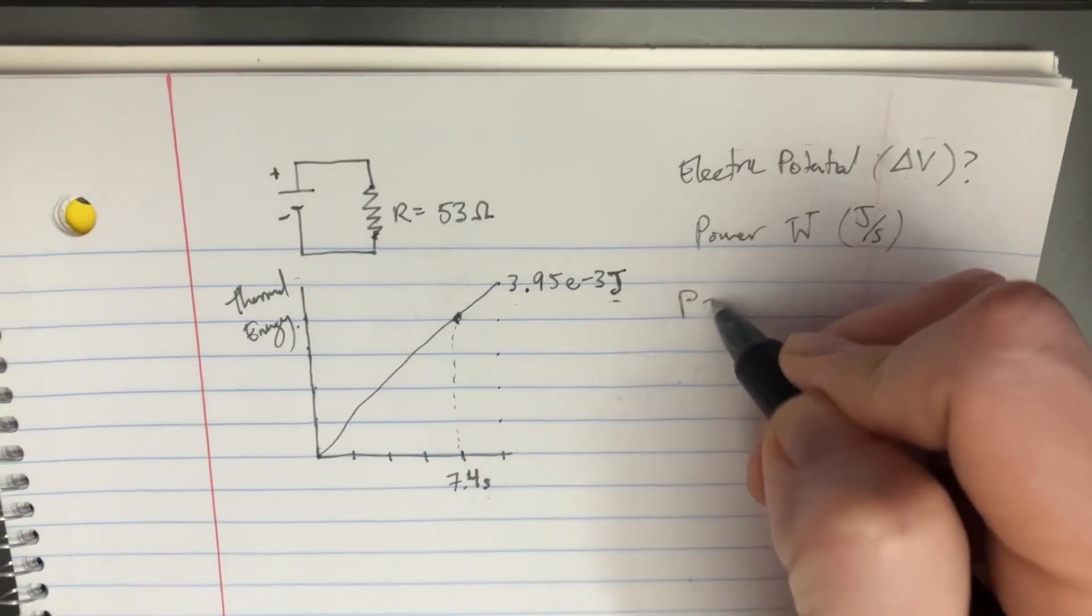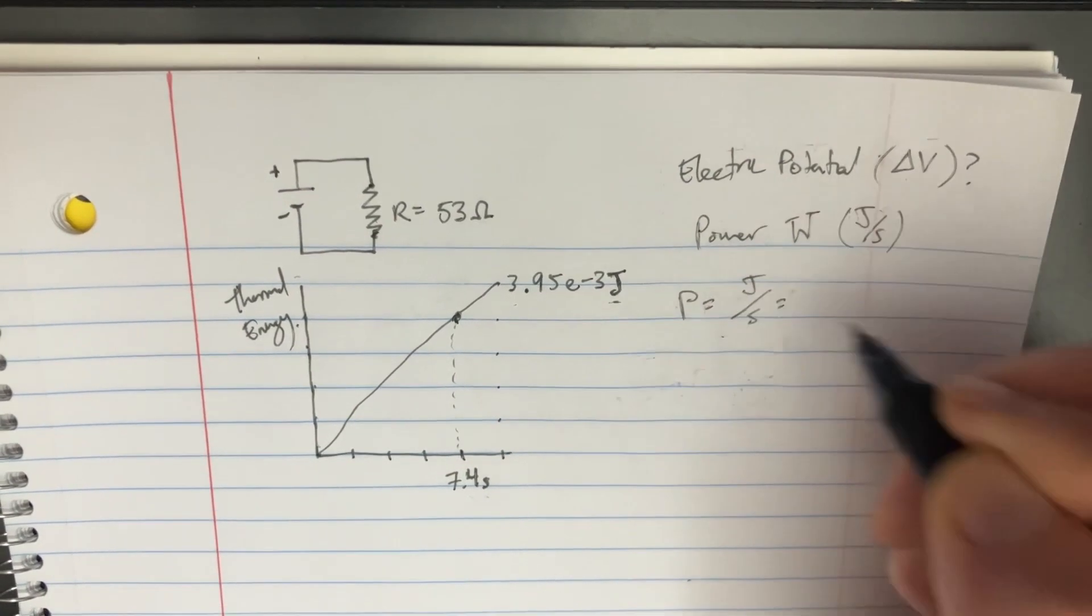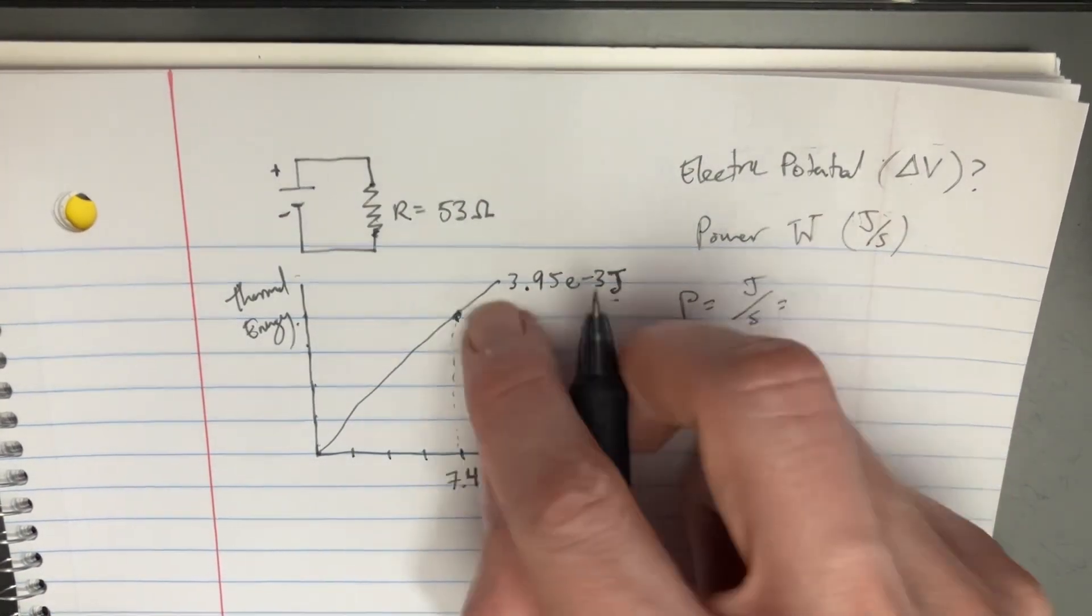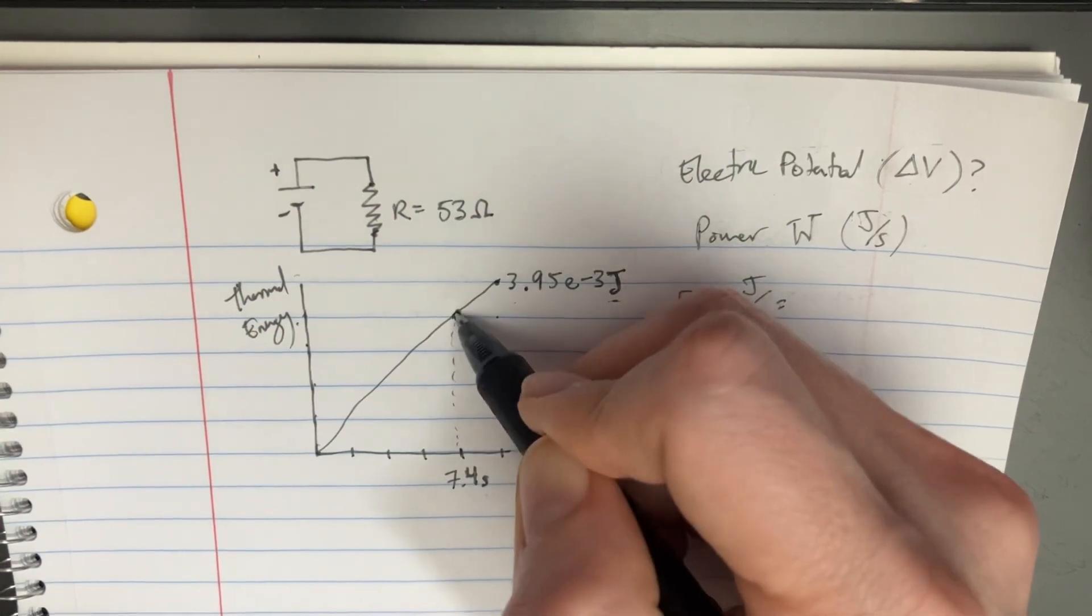We should be able to use the equation for P, power, which is joules per second. Let's do our calculations then. Here we have the thermal energy at this point, but we want to know it at this point, so we could divide it by 7.4 seconds.